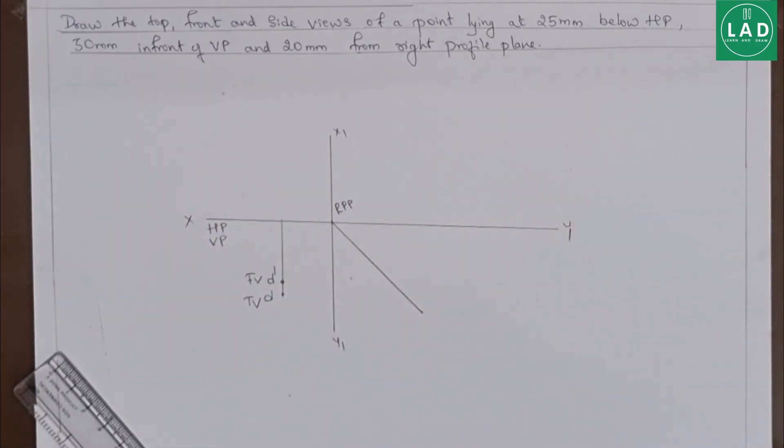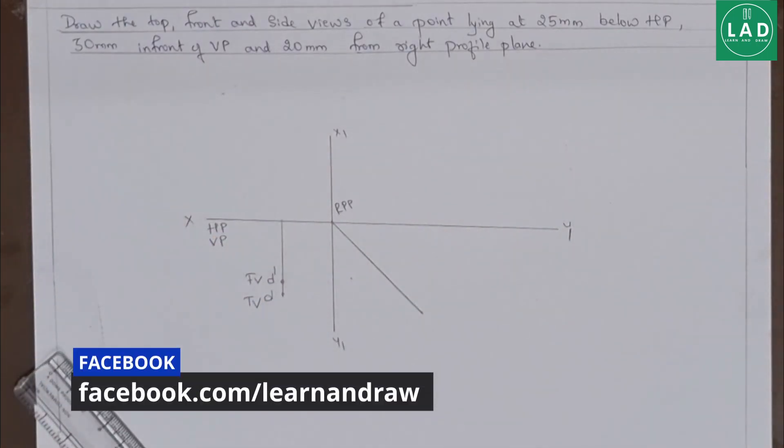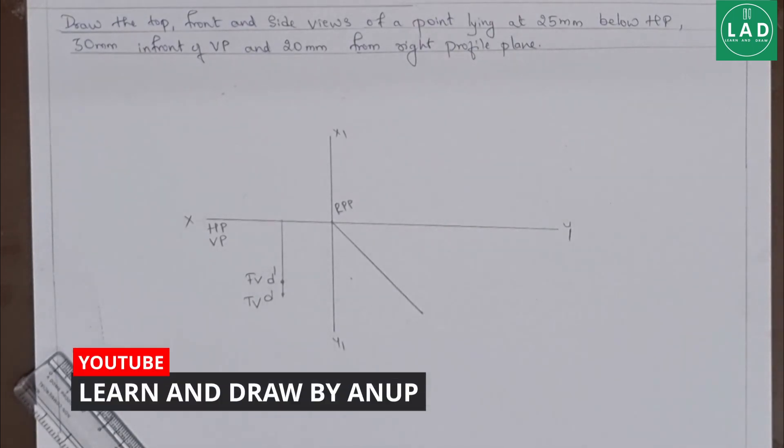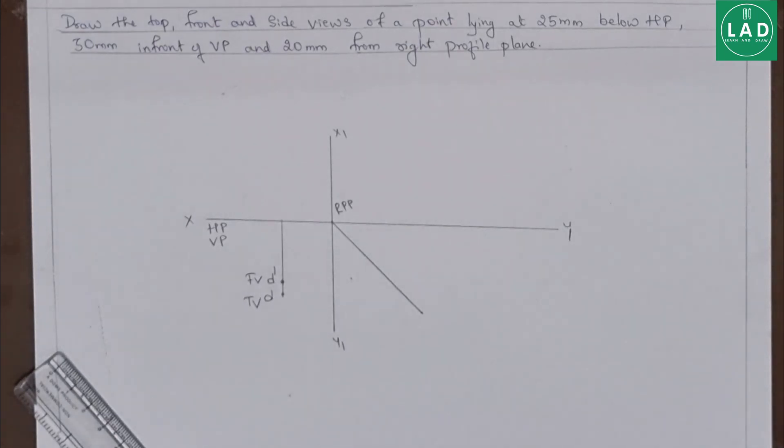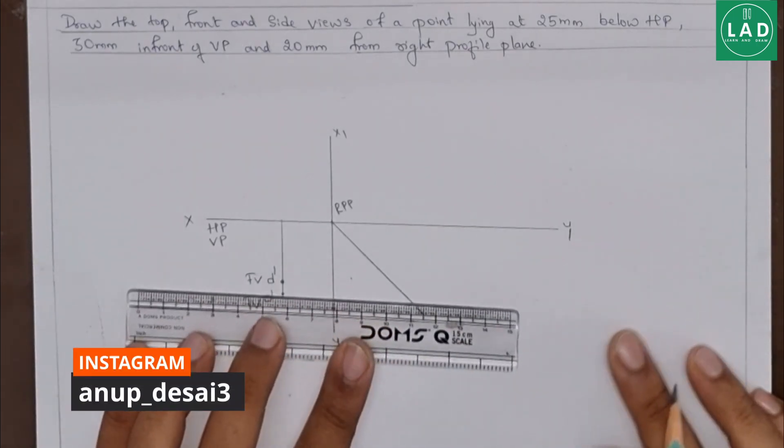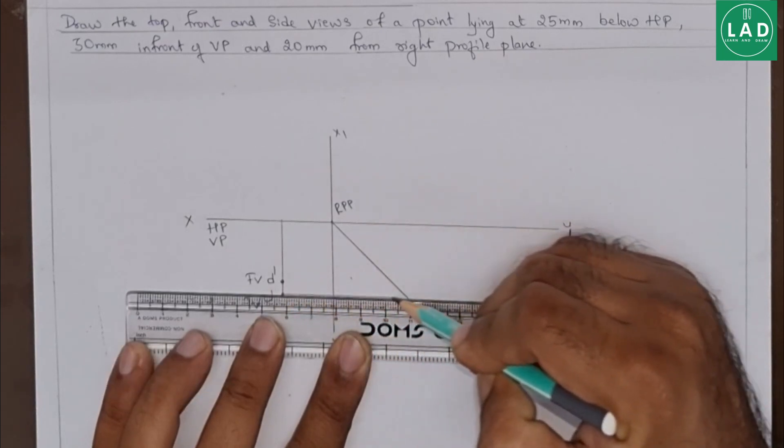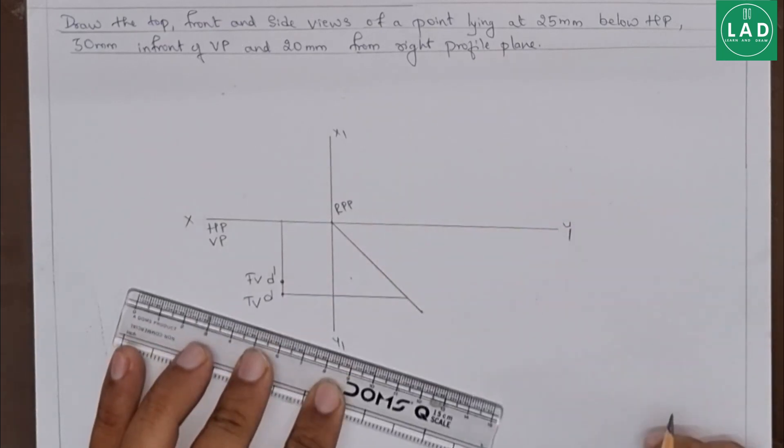Next using the front view and top view, let's draw the projection lines which meet this 45 degree line and then the intersection of both the projection lines will give the side view. Now first, let's draw the projection line from the top view which will touch the 45 degree line.